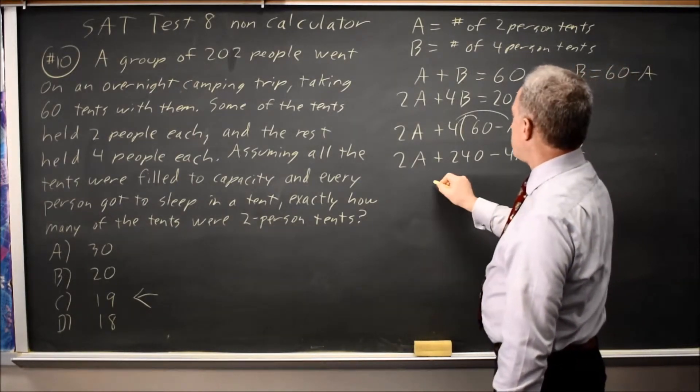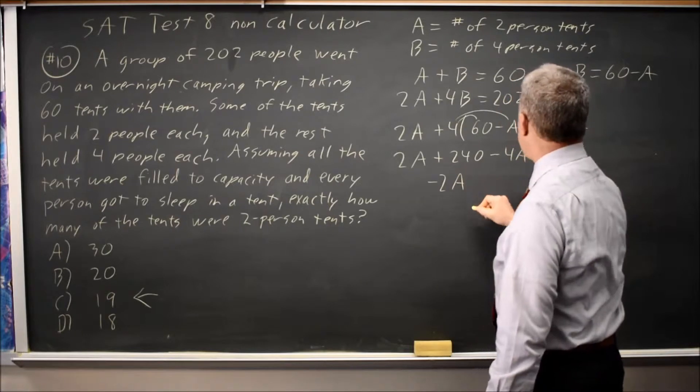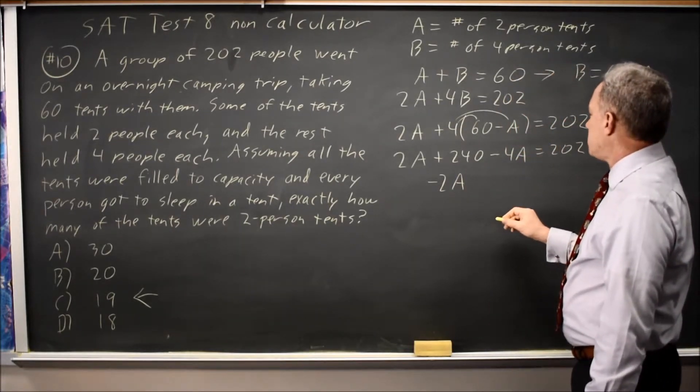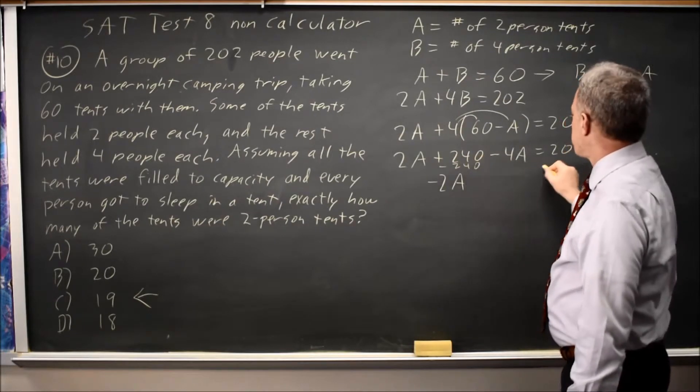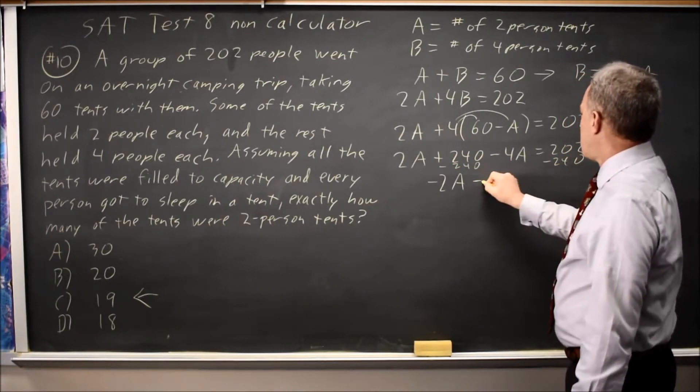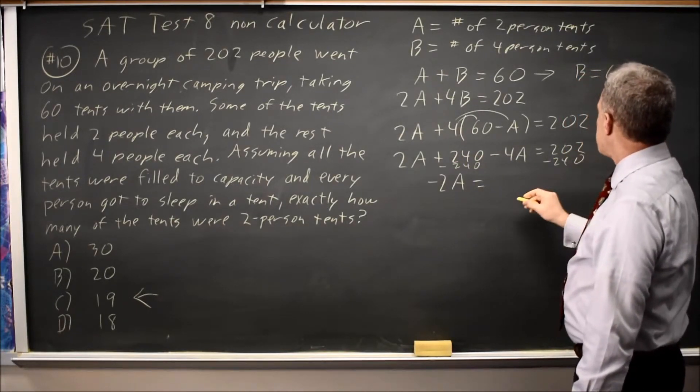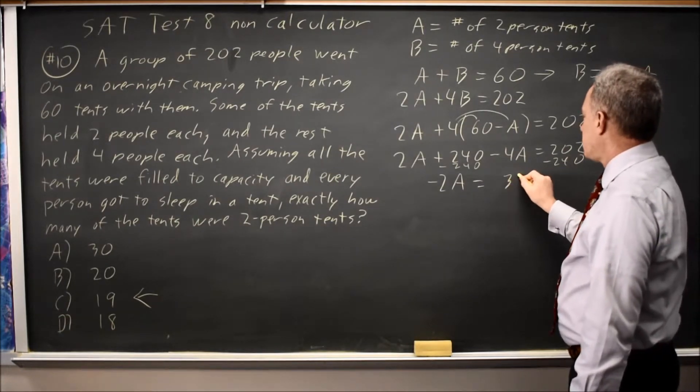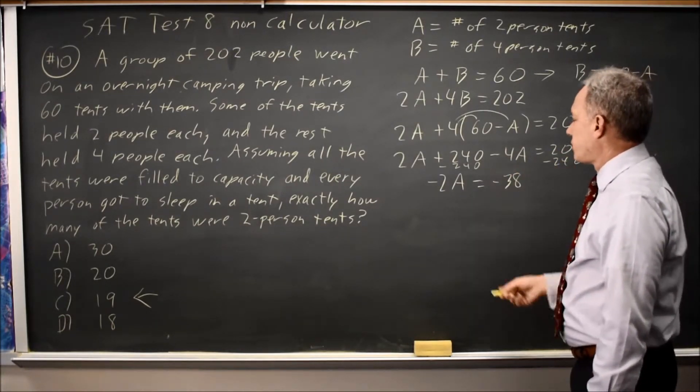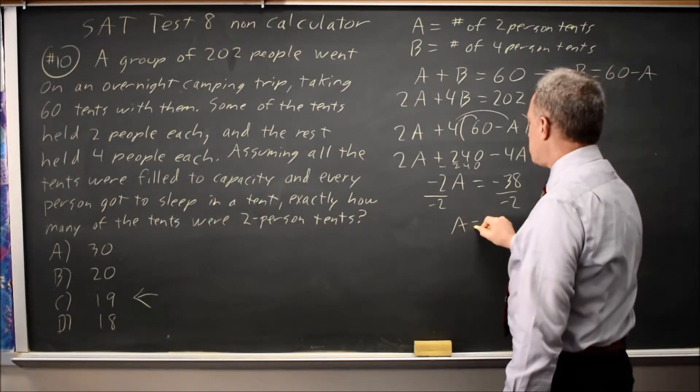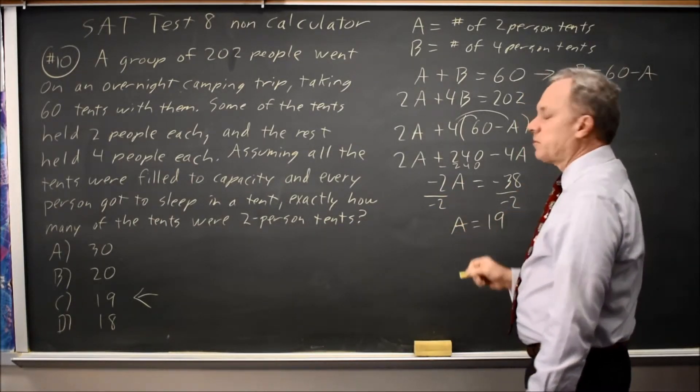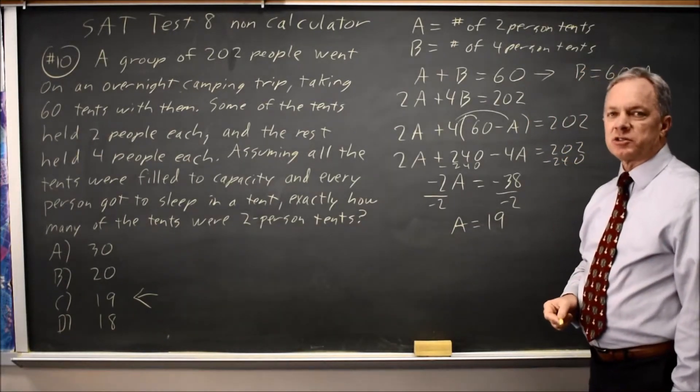2A minus 4A is negative 2A. If I subtract 240 from both sides, I get 240 minus 202 is 38, so 202 minus 240 is negative 38. Divide both sides by negative 2. A equals 19. That's the same answer I got by substituting in answer choices.